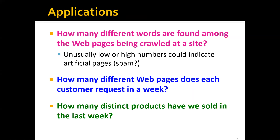Here are some example applications of this problem. The first application would be to answer questions such as how many different words are found among the web pages being crawled at a site. An unusually low or high number could indicate artificial pages or spam pages, so answering this question can help us perform spam detection. A second application may be to answer questions like how many different web pages does each customer request in a day or a week. Another application may be to answer how many distinct products have we sold in the last week.